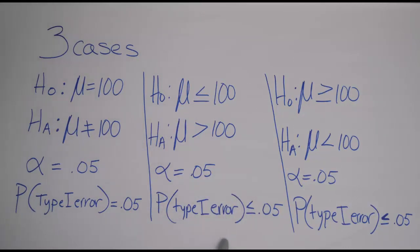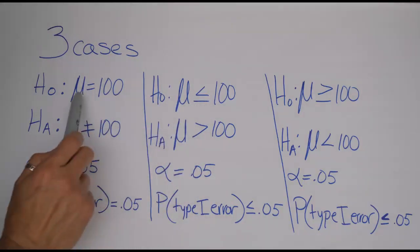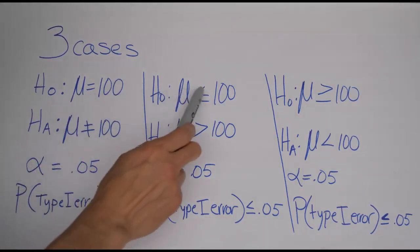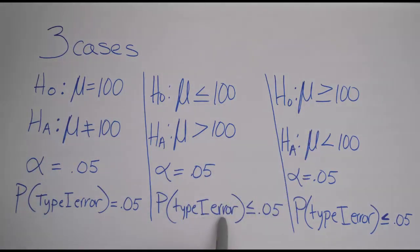And they're asking, what's the probability you commit that mistake here? Well, in these cases where the null hypothesis isn't just a simple equal to, but rather it's a less than or equal to or greater than or equal to, then the probability of a type 1 error is at most a maximum of the alpha for the problem.